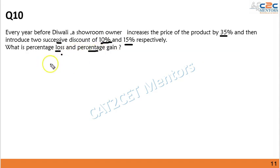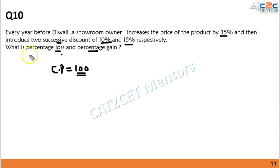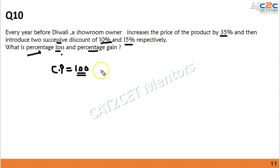It will be wiser to take the cost price initially as 100 rupees, so whatever we get at the end will be calculated on the base of 100. This makes calculating percentage loss and percentage profit much easier. Assuming the cost price was 100 rupees, a price increase of 35% means the selling price is initially 135 rupees.